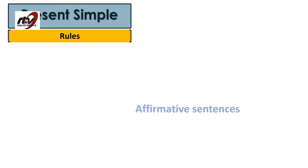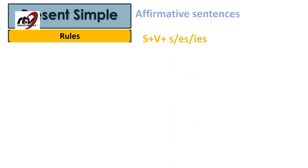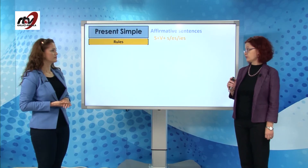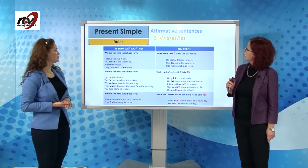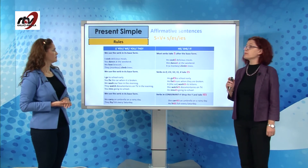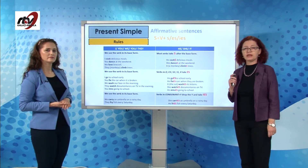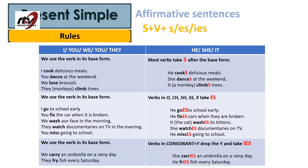Let's take a look at the rules of present tense simple for the affirmative sentence. The structure is subject, verb and an ending which can be S, ES or IES. Remember, if the subject is I, you, we or they, the verb stays the same — we add nothing to its base form. Like: I cook delicious meals, you dance, we love broccoli, monkeys climb trees.